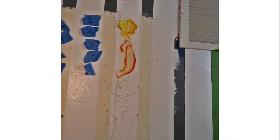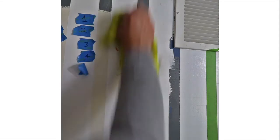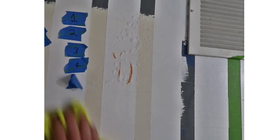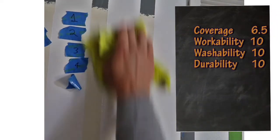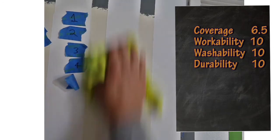Washability. I put ketchup, mustard, red wine, coffee, pencil, crayon, six things on here after the paint had cured for 14 days. Then I take four different cleaners, spray them on here, let it sit on here, wipe it off. All of it came off. Everything came off. There was no burnishing done to the paint. There was no evidence that I had cleaned it. It was perfect. 10 out of 10.